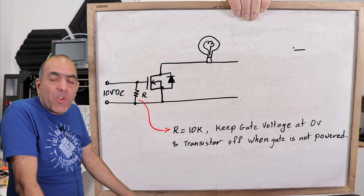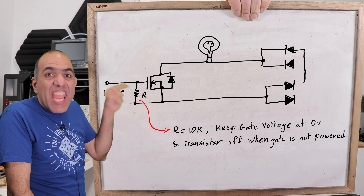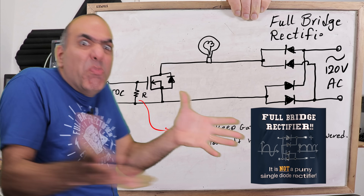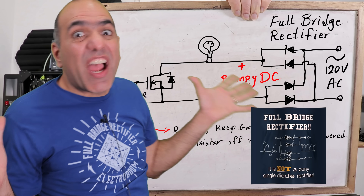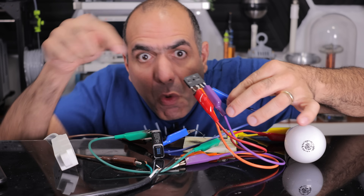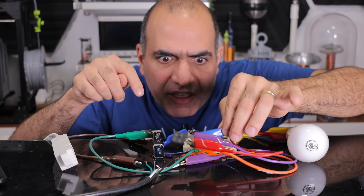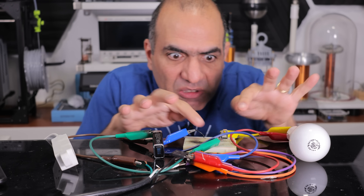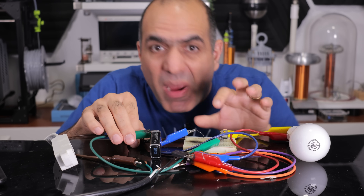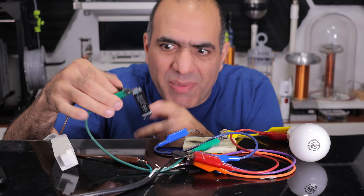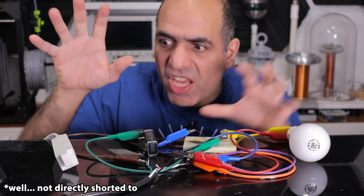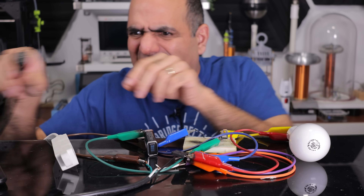Unless we rectify the AC first using a full bridge rectifier. I have my full bridge rectifier connected to my FET circuit, and I'm going to power the gate from a 9-volt battery so it's isolated from the live wires.